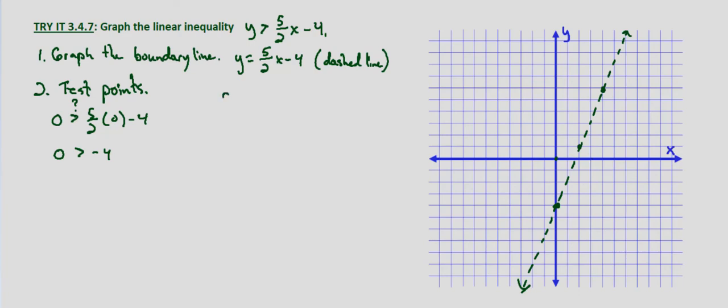So 0 is greater than 5 halves times 3 minus 4, is 0 greater than 15 halves minus 8 halves. So 0 greater than 7 halves. And it's not. That's an untrue statement.